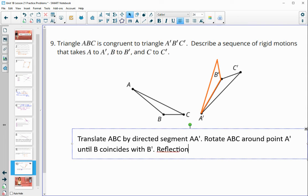So we still need to do one more thing, which is do a reflection. So reflect ABC over segment A prime, B prime. And then that would be it. Then that would flip C onto C prime.